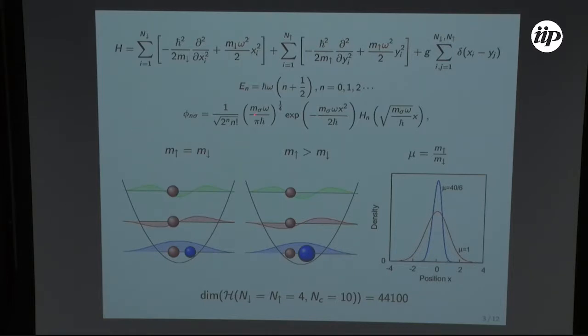And the wave function depends on the mass of the particles so comparing lithium and potassium you can see here the density of the ground state so the potassium would be much narrower than lithium, even though these are just few particles.